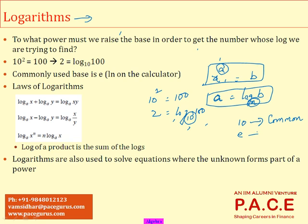If the base is 10, we call them common logarithms. If the base is e — which equals approximately 2.718, as discussed in earlier chapters — we call them natural logarithms. In the financial world, natural logarithms are most common. On calculators, natural logarithms appear as 'ln', while common logarithms with base 10 appear as 'log'.